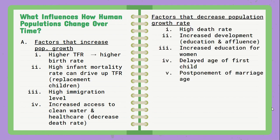Factors that decrease population growth rate would be high death rates and an increase in development over time — the opportunity for women to partake in more education or just have greater affluence, being able to sell goods, make money, and trade. Delaying the age of the first child or postponement of marriage age all play a role in how many children a family is going to have, which plays a role in how the population will grow over time.